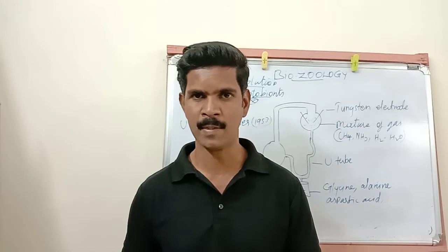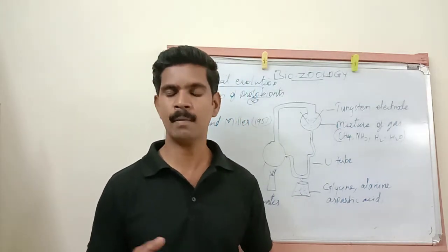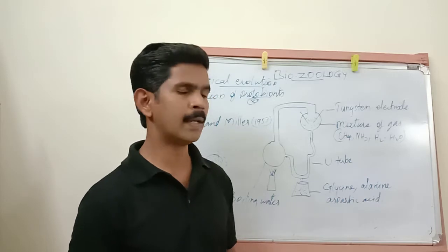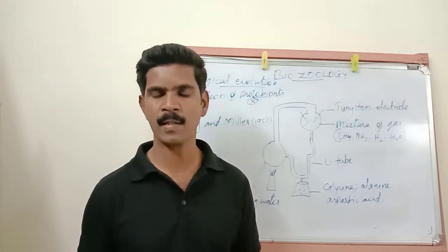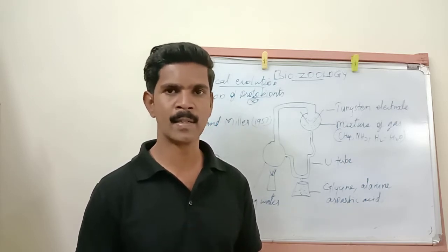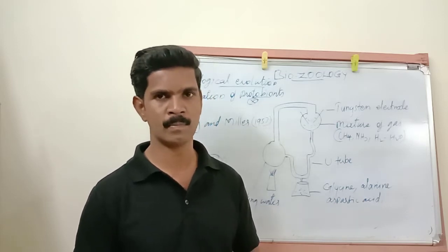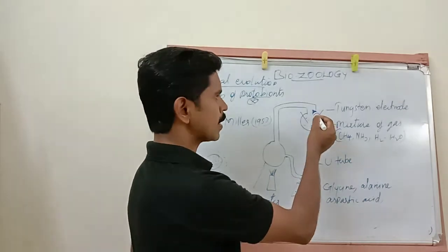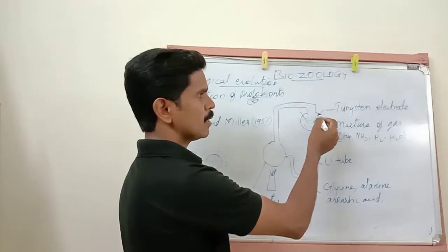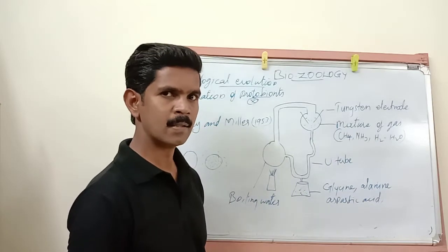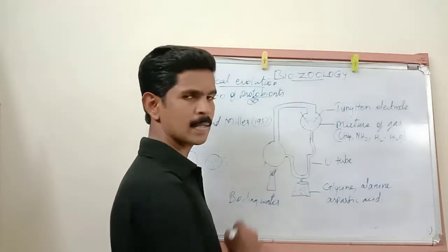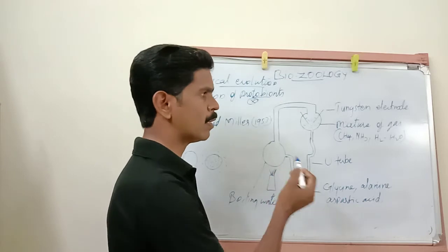In this experiment, they took a mixture of gases — ammonia, methane, and hydrogen. These gases were allowed to circulate over a tungsten electrode, which provided an electric discharge. Using this diagram, we can see the tungsten electrode, over which the mixture of gases — methane, ammonia, and hydrogen — was circulated.